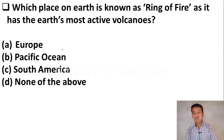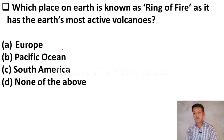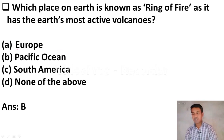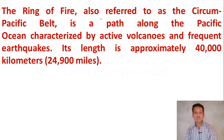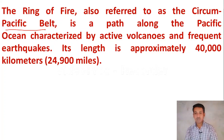Which place on Earth is known as the Ring of Fire, as it has the Earth's most active volcanoes? Option A, Europe. Option B, Pacific Ocean. Option C, South America. Option D, none of the above. The right answer is Option B — Pacific Ocean is known as the Ring of Fire, also referred to as the Circum-Pacific Belt. It is a path along the Pacific Ocean characterized by active volcanoes, with an approximate length of 40,000 kilometers.